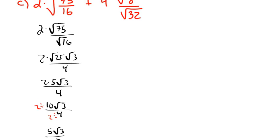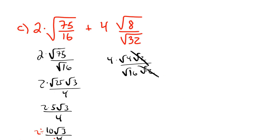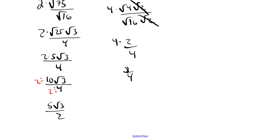Now the right side: 4 times radical 8, over the square root of 32. Radical 8 breaks down to radical 4 times radical 2, and radical 32 is radical 16 times radical 2. The radical 2 on top and radical 2 on the bottom cancel out. So we have 4 times square root of 4 — which is 2 — all over square root of 16, which is 4. That gives us 4 times 2 over 4, which is 8 over 4.